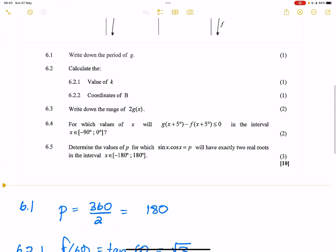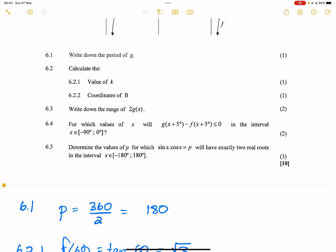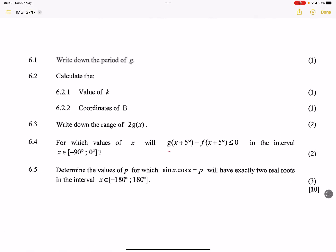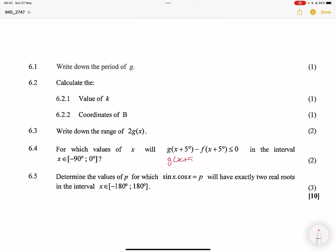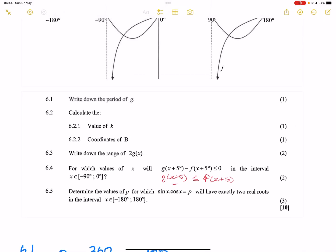The next question as we move along. They say, for which values of x, I know you guys kind of do not like these kind of questions, for which values of x will g(x + 5) - f(x + 5) be less than or equal to 0, in the interval minus 90 and 0. Now, please, I want you to listen carefully. So if you look at this, you can also actually write it down as g(x + 5) less than f(x + 5). So what are we actually looking at? Where the graph of g is below the graph of f.